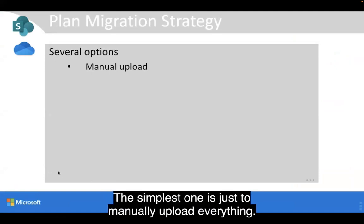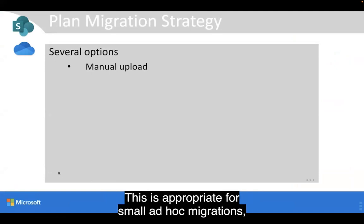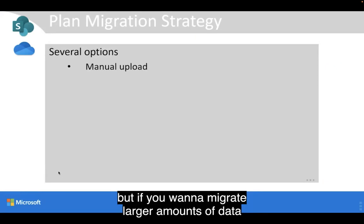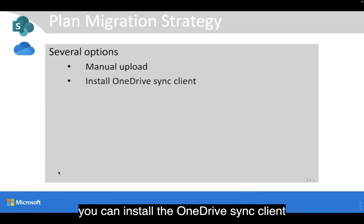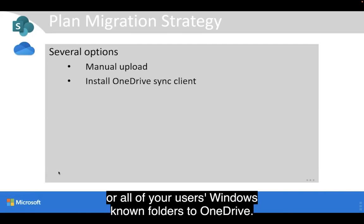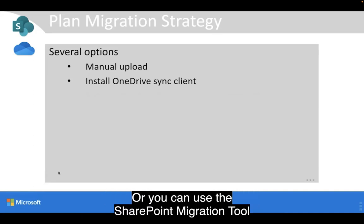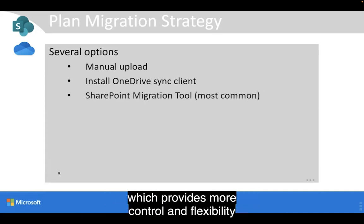The simplest option is to manually upload everything. This is appropriate for small ad hoc migrations, but if you want to migrate larger amounts of data in a more structured manner, you can install the OneDrive sync client and push out policies to redirect some or all of your users' Windows-known folders to OneDrive. Or you can use the SharePoint Migration Tool, which provides more control and flexibility and allows you to migrate a number of different kinds of file stores.